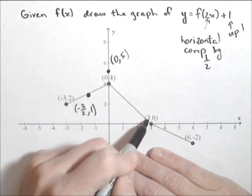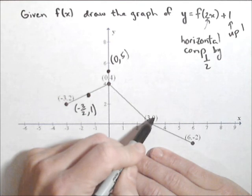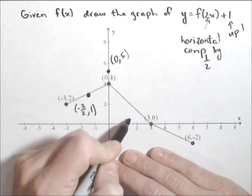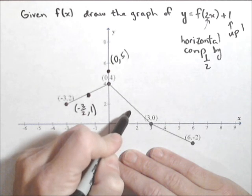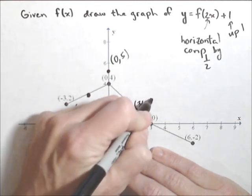Now we're going to do the point (3, 0). Multiplying the x value by a half is going to make it 3/2, and moving it up 1 is going to make the y value 1. So it's going to be 3/2, or 1.5, comma 1. So we'll move it there, and we'll label it (3/2, 1).